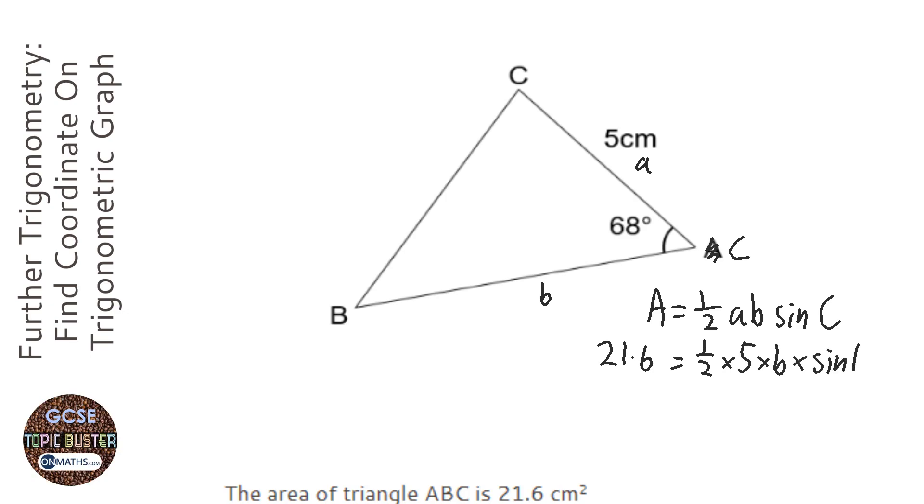Then what we need to do is just divide both sides by half times 5 times sine 68, so it's just going to be 21.6 over half times 5 times sine 68 to find out what b is.